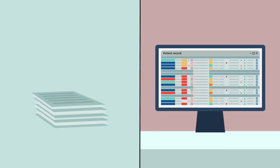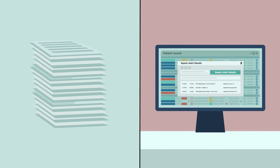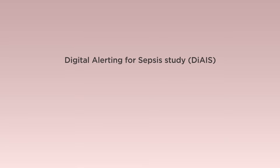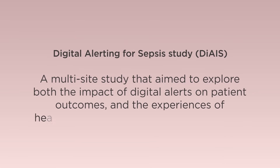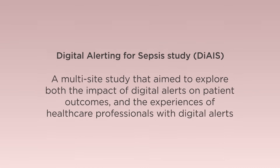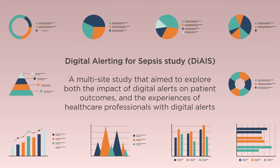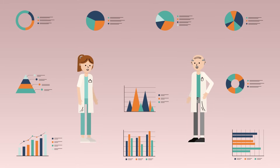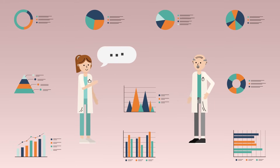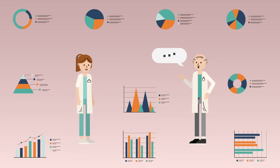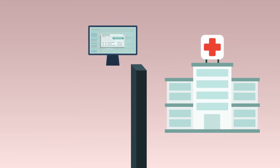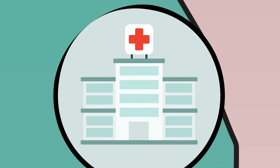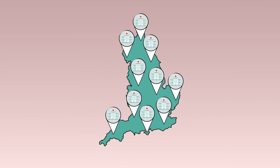There is a variety of digital alerts in use, but no validated one is available to NHS trusts. The Digital Alerting for Sepsis (DIAL) study is a multi-site, mixed-method study that aimed to explore the impact of digital alerts on patient outcomes and mortality associated with sepsis, as well as the experiences of healthcare professionals working with different digital sepsis alerts, to identify barriers and facilitators of their use in NHS hospitals.